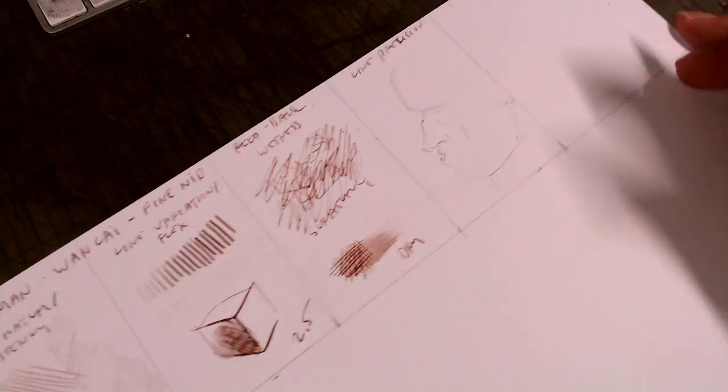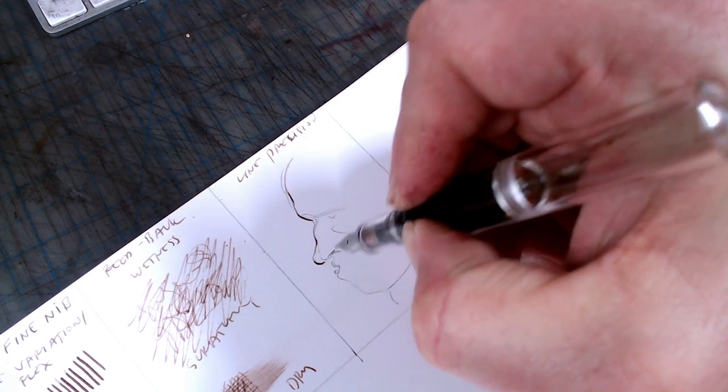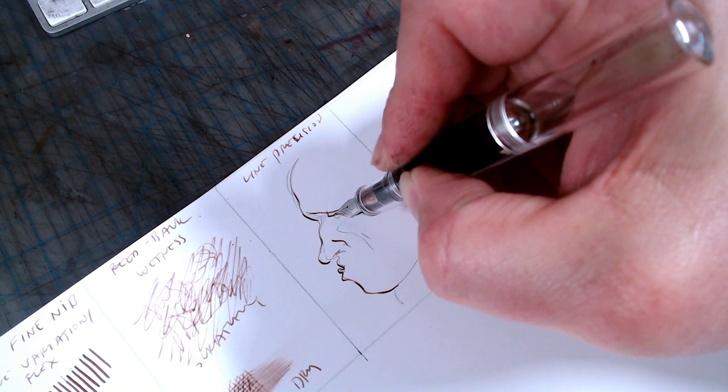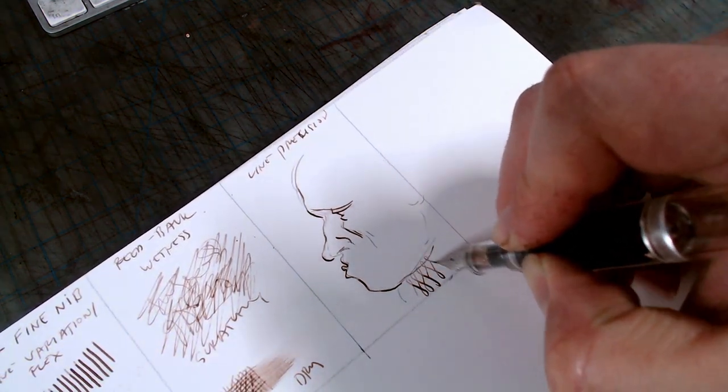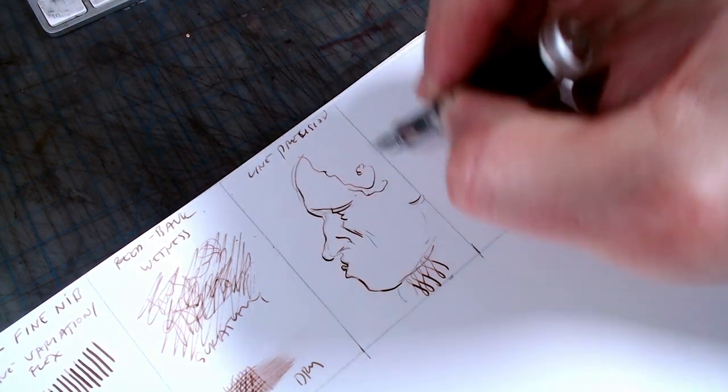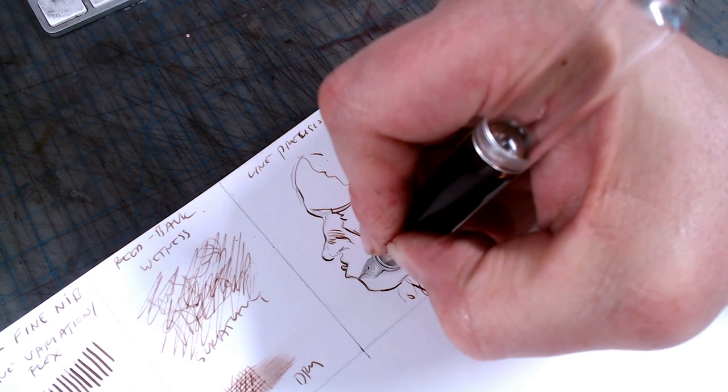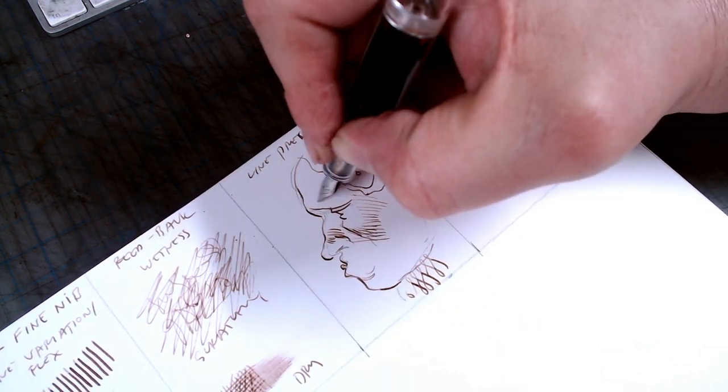The last test is left deliberately vague, but is called the line precision test. It's intended to cover all the little things that make a pen a pleasure to work with. Your ability to control the lines, its responsiveness to angle, and pressure, and speed. Sometimes this test is a quick doodle, and sometimes it's a more extended drawing. Either way, in this case, the nib lived up to its extremely low expectations.